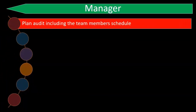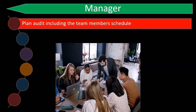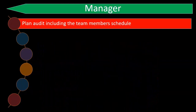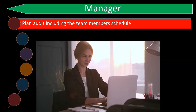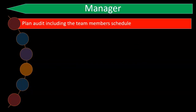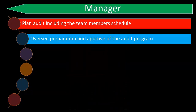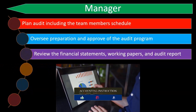The second level is the manager. They plan the audit including team members' schedules — determining who is where, when the team goes out to the engagement, and what procedures will happen. This is more of a day-to-day planning function. The manager also oversees preparation and approval of the audit program, being more involved in designing and implementing the on-the-ground audit procedures.